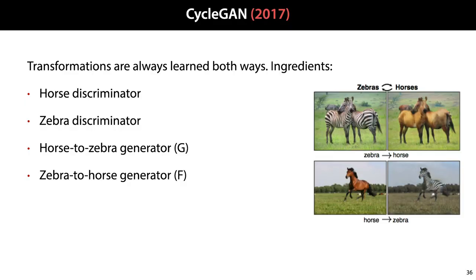The cycle GAN solves this problem by adding a cycle consistency term to the loss function. The idea is that we train two generators: one to map from domain A to domain B, and one to map from domain B to domain A. In this case, we have a horse-to-zebra generator and a zebra-to-horse generator, and each comes with its own discriminator. The idea of the cycle consistency loss term is that if we transform a picture from a horse to a zebra and back again, the result should be close to the original image. The objective becomes to train both transformations together so that each discriminator can't tell the generated images from real ones, and the cycle consistency loss for both combined is low.